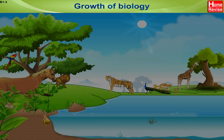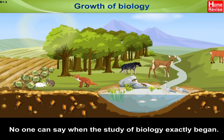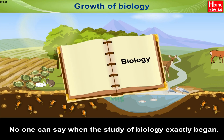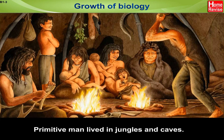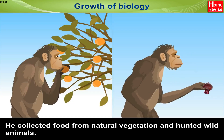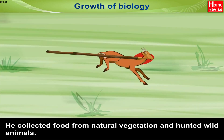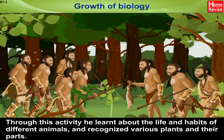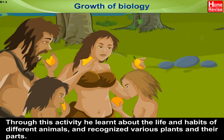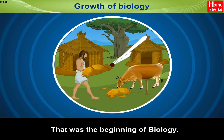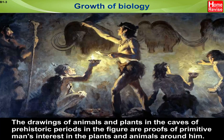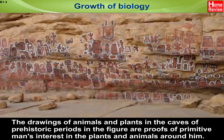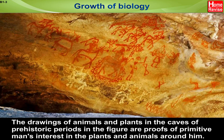Growth of Biology. No one can say when the study of biology exactly began. Primitive man lived in jungles and caves. He collected food from natural vegetation and hunted wild animals. Through this activity, he learned about the life and habits of different animals and recognized various plants and their properties. That was the beginning of Biology. The drawings of animals and plants in the caves of prehistoric periods are proofs of primitive man's interest in the plants and animals around him.